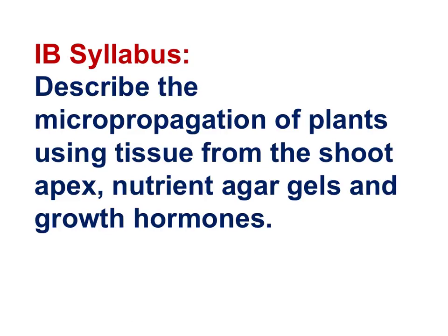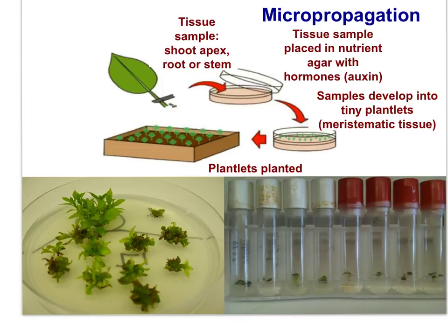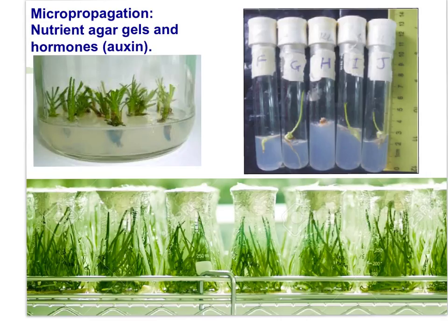Here is the IB syllabus statement: Describe the micropropagation of plants using tissue from the shoot apex, nutrient agar gels, and growth hormones. This photograph shows the industrial production of date palm using the shoot apex with undifferentiated meristem tissue. The shoot apical meristem tissue has been placed on nutrient gels infused with hormones auxin and gibberellin. The sample can be washed to remove any viruses. Micropropagation is easy with plants because of the undifferentiated meristematic tissue at the apical regions. Tissue samples can be cut and placed in bulk on nutrient agar infused with hormones, resulting in virus-free plantlets.